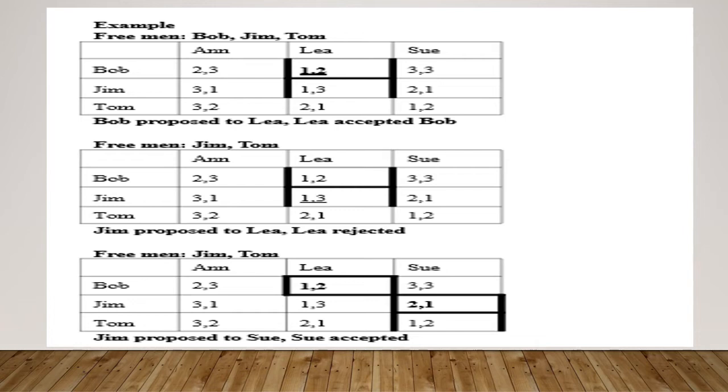So now, since Bob has Lee as his first preference, he is proposing to Lee. And Lee is looking at her ranking matrix. She found Bob to be a nice pair and she is accepting Bob.